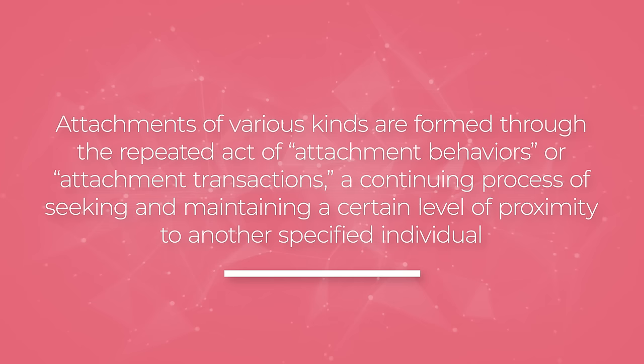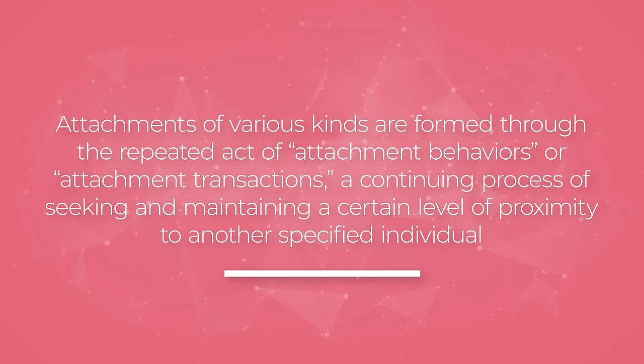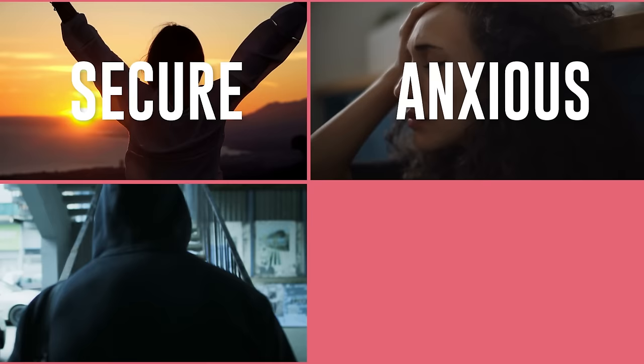Attachments are actually formed through the repeated act of attachment behaviors or attachment transactions — best thought of as a continuous process of seeking and maintaining a certain level of proximity to another specific individual. Generally speaking, there are four types of attachment styles: secure, anxious, avoidant, and fearful attachment styles.